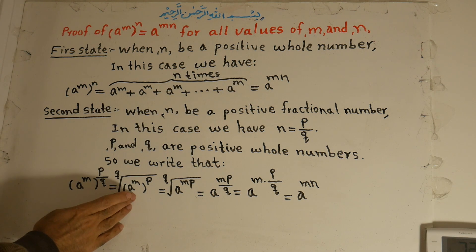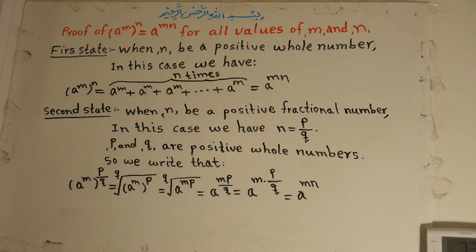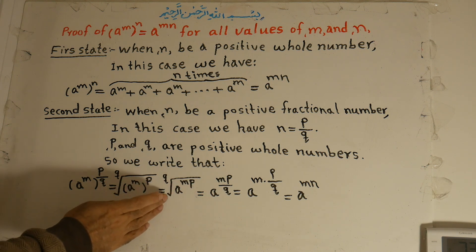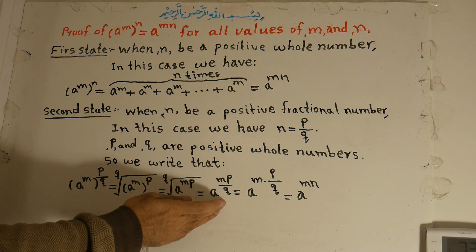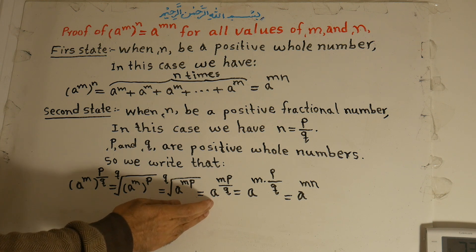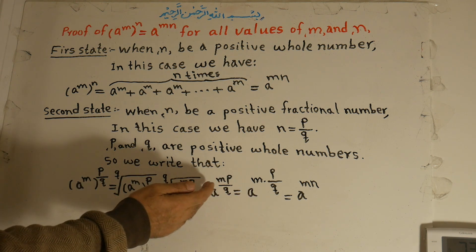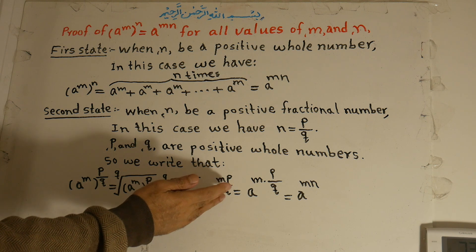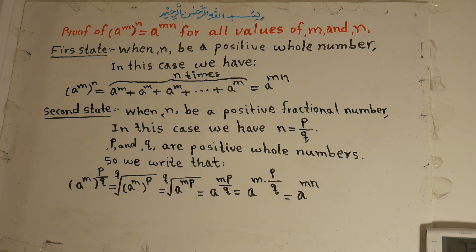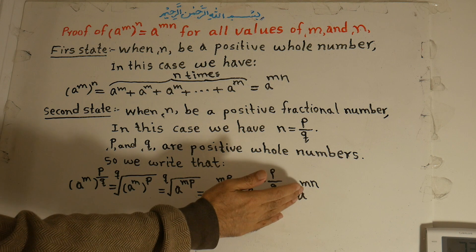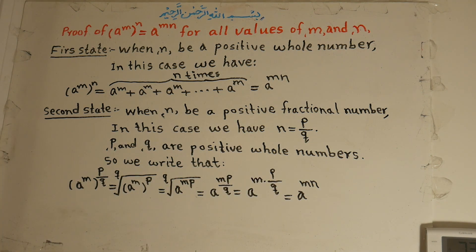This equals a to the power of m times p, so a to the power of mn equals a to the power of mp under the q-th root. If we remove the root, the q comes to the denominator as an exponent, giving a to the power of mp over q. Since p over q equals n, this equals a to the power of mn.